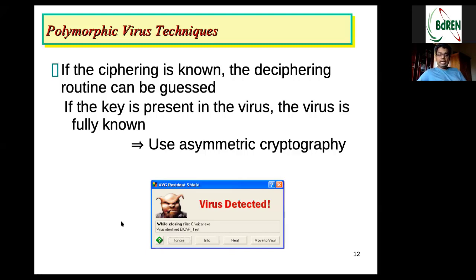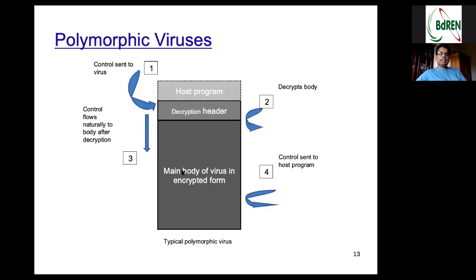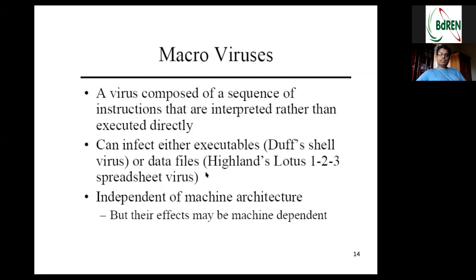Some viruses use asymmetric key cryptography to hide their body, and some use it to collect ransoms — they hide the user's information and ask for ransom to decrypt the data. That category is called ransomware. A typical polymorphic virus has a host program, a small decryption header, and an encrypted virus body. When the host program loads, the decryption header runs, collects the key from the environment, decrypts the body, and executes it.